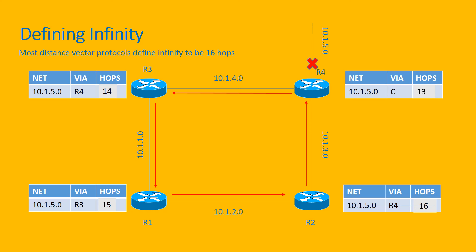Router 3 does the same by removing the route from its routing table and sends the update to Router 1. Router 1 will eventually remove the route for network 10.1.5.0 from its routing table. The routing tables of all routers will no longer have the route for network 10.1.5.0. Setting a maximum hop count of 15 helps solve the counting to infinity problem.